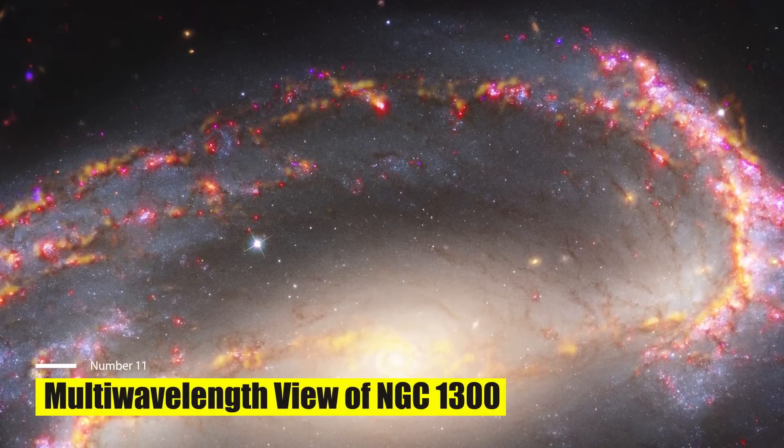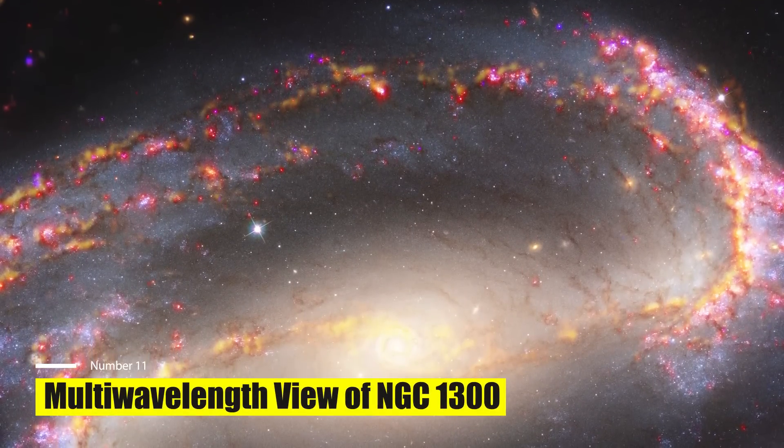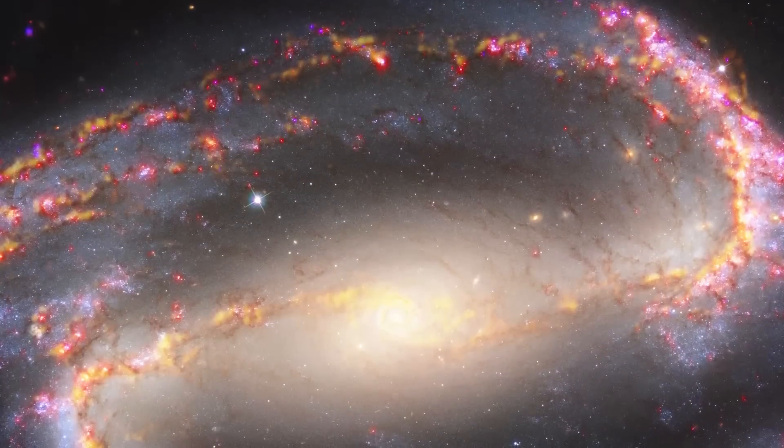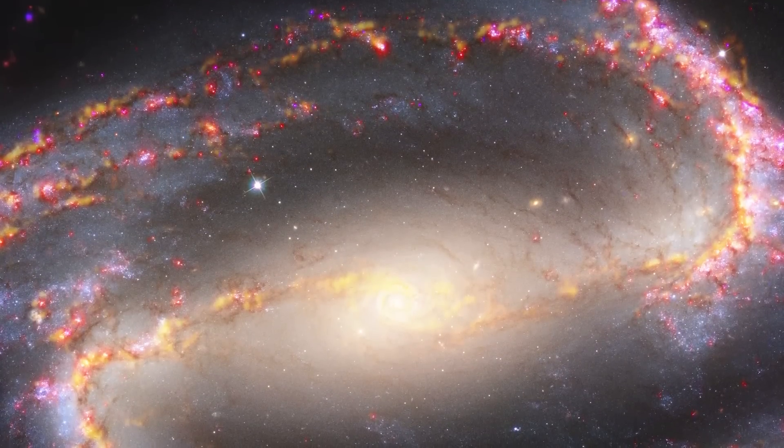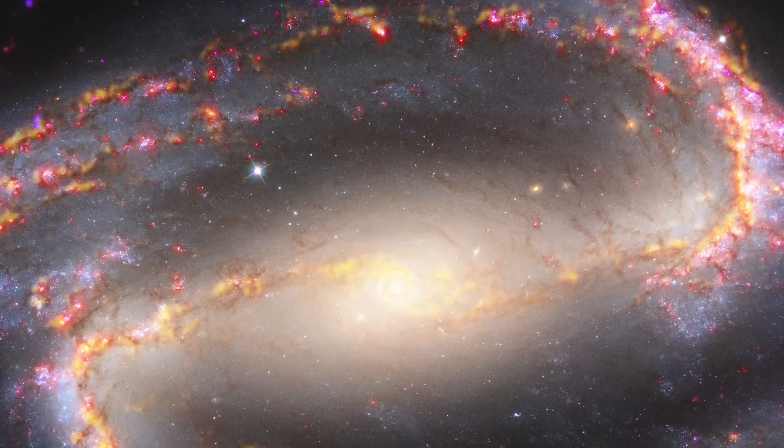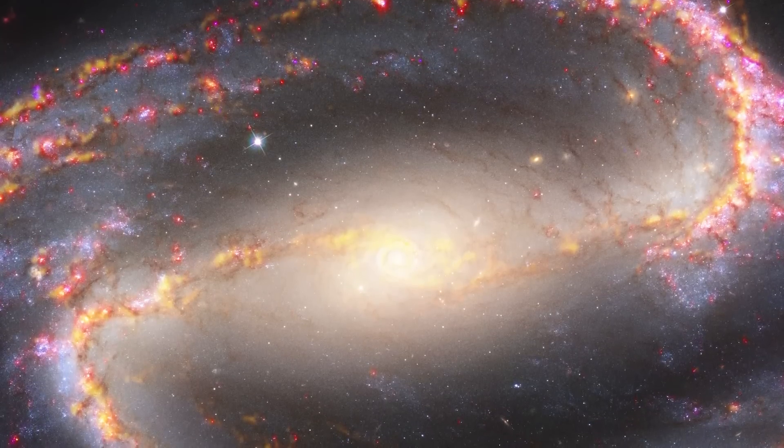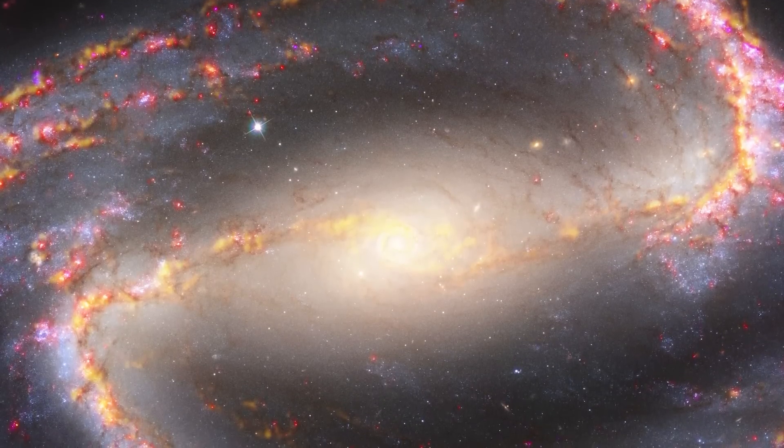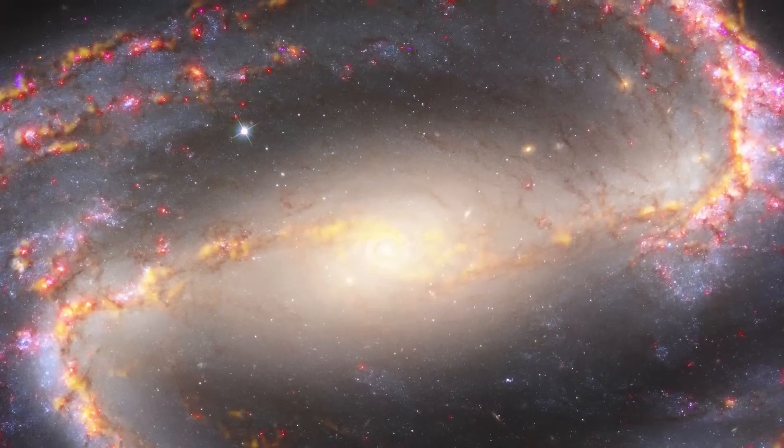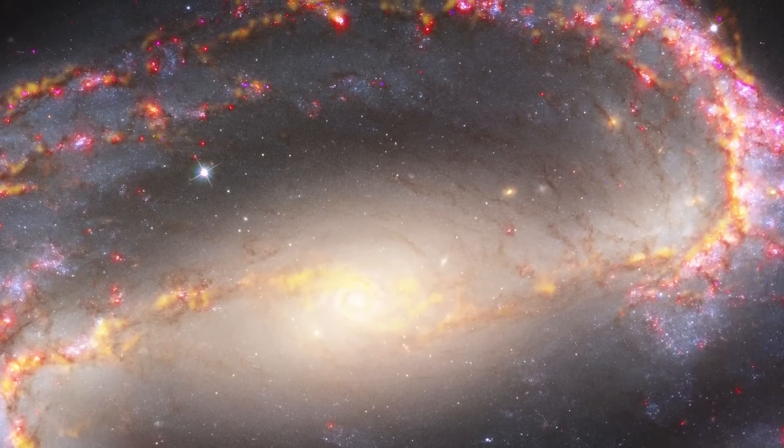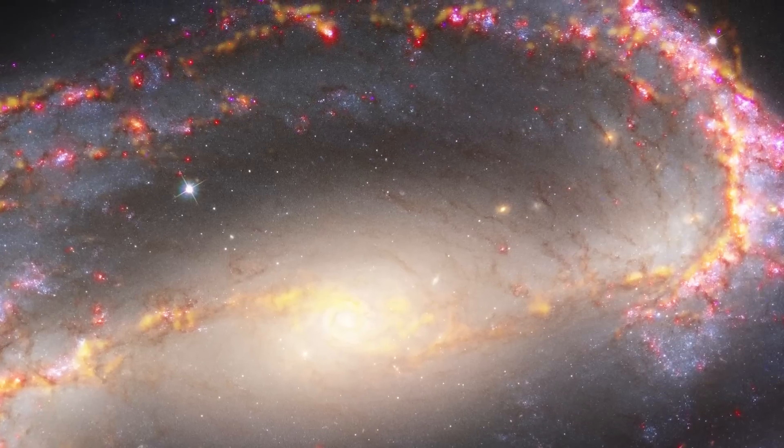Multi-Wavelength View of NGC 1300. This image of the spiral galaxy NGC 1300 combines multiple observations to showcase star populations and gas. Yellow highlights, resulting from radio light collected by the Atacama Large Millimeter or Submillimeter Array, ALMA, emphasize the frigid molecular gas clouds that serve as the starting point for star formation.